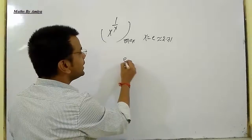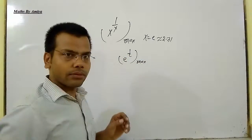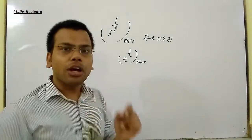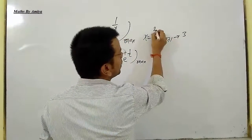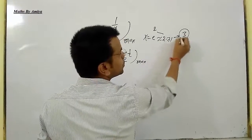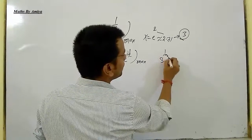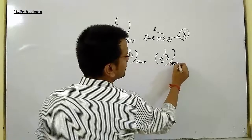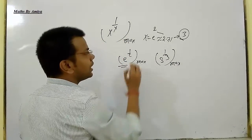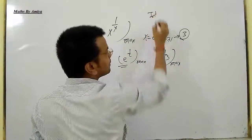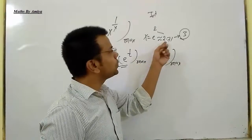So our first concept is: x raised to power 1/x is maximum when x equals e ≈ 2.71. Or, x raised to power 1/x would be more if the value is near to 2.71. If we talk about integers, 2.71 is between 2 and 3 but nearer to 3. So for the integral value, 3 raised to power 1/3 is the maximum.